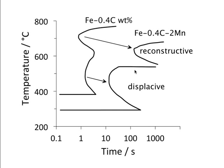Displacive means that if you polish the surface of austenite completely flat and allow it to transform to any of these products, you will see the invariant plane strain shape deformation. Can you explain why manganese — bearing in mind we have a logarithmic scale — has such a large effect on reconstructive transformation and not on displacive? The change in transformation time is much smaller for displacive transformations than for reconstructive ones. Why is that?